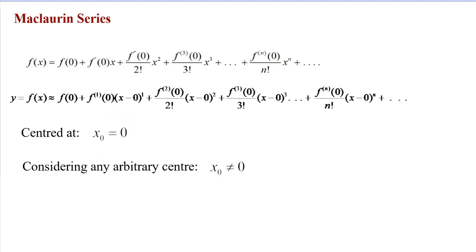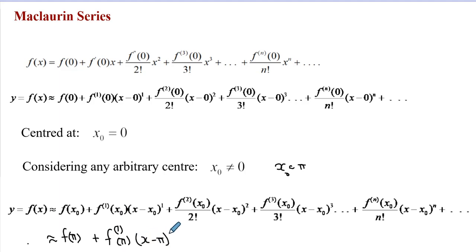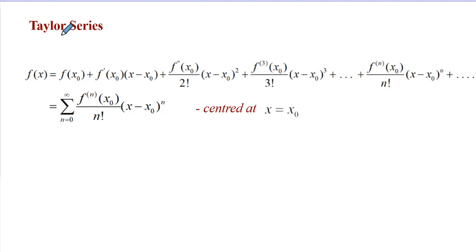If we replace the position of 0 with x_0 not equal to 0, the power series would look different. For example, if x_0 = π, the power series expansion would look like f(π) plus the first differential coefficient evaluated at π, multiplied by (x − π)^1, and so on — evaluating the function at the center of development π. This type of expansion is called a Taylor series expansion.